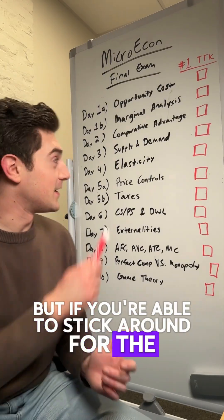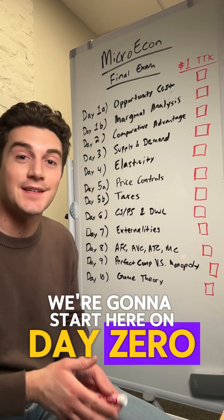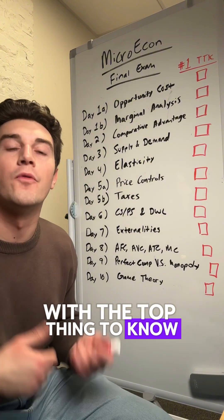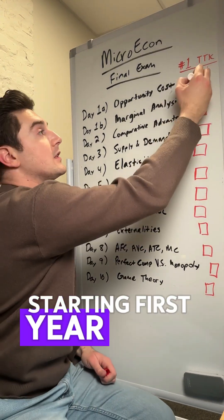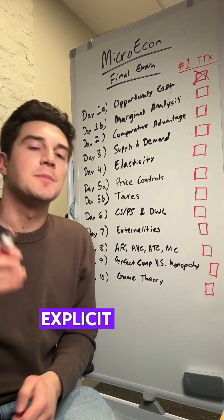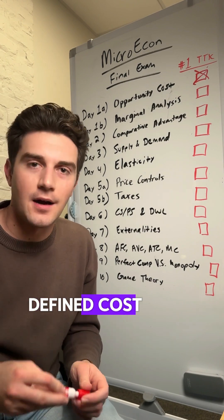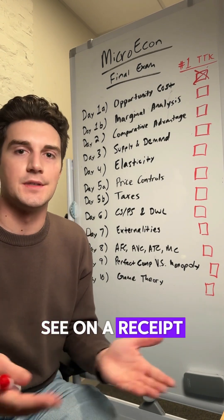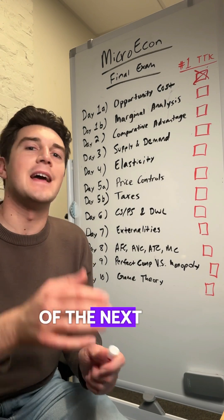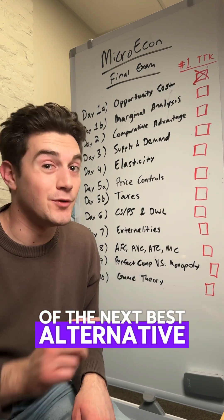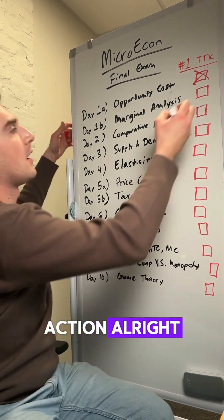But if you're able to stick around for the next 10 days here, we're going to start on day zero with the top thing to know for each of these concepts. Starting first with opportunity cost. Explicit cost is just the stated defined cost of an action, like what you would see on a receipt. Whereas the implicit cost is the value of the next best alternative you pass up in favor of the explicit cost action.